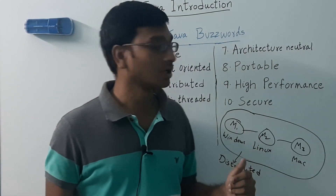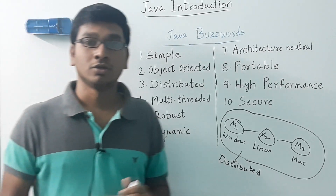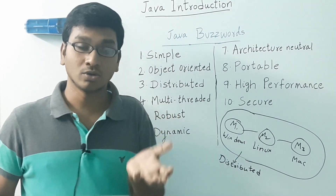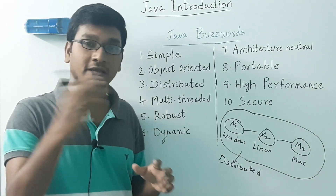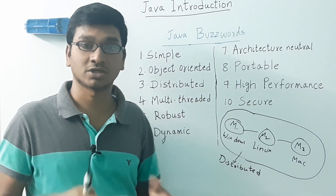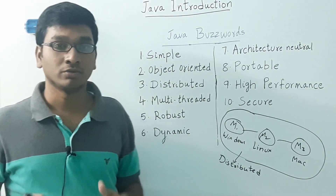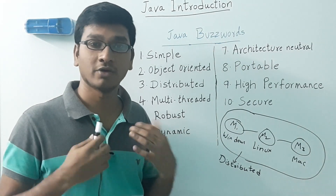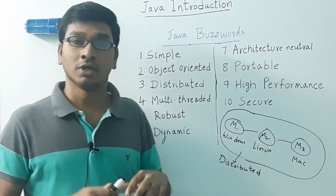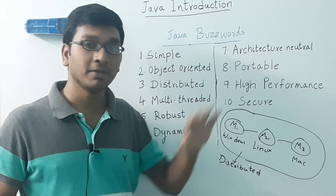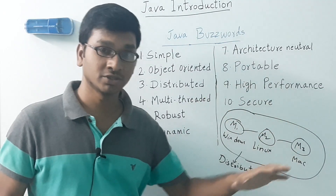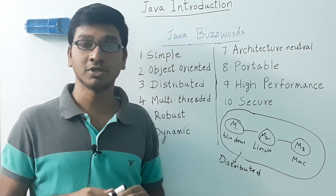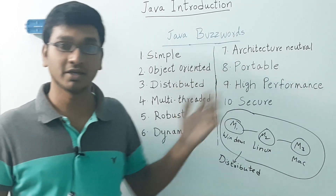Next comes architectural neutral — this is very important. When you write a Java program and compile it, you get a bytecode. This bytecode can be executed on any hardware architecture or software architecture without making any changes. That's why it's called architectural neutral. For example, if you write a Java program on Windows and compile it, the resulting bytecode can be executed on any other operating system like Linux or Mac without any changes. This is the main reason why people say Java is platform independent.